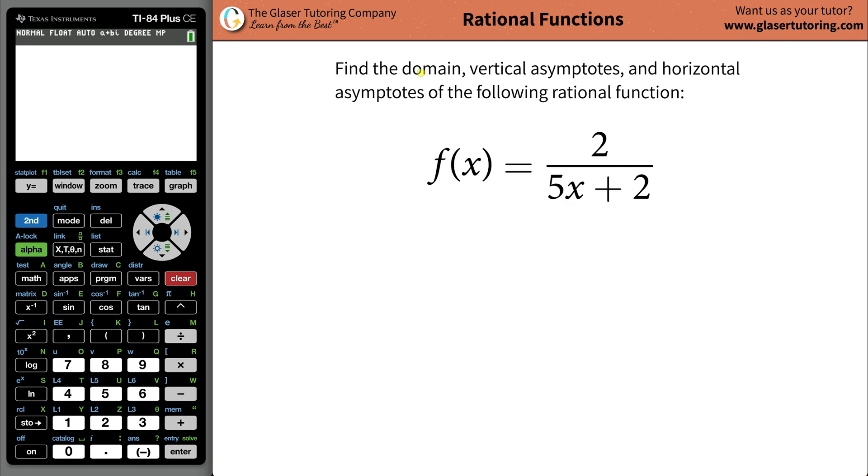Hi there. Today I would like to teach you how to find the domain, vertical asymptotes, and the horizontal asymptotes of the following rational function: f(x) equals 2 divided by 5x plus 2.